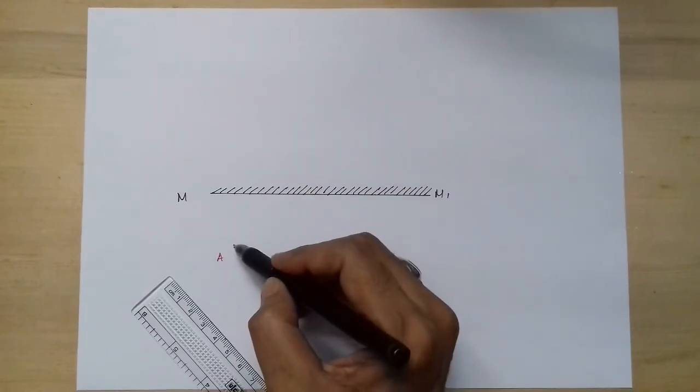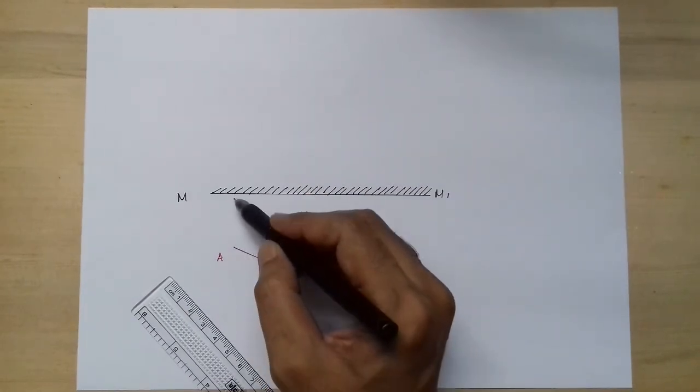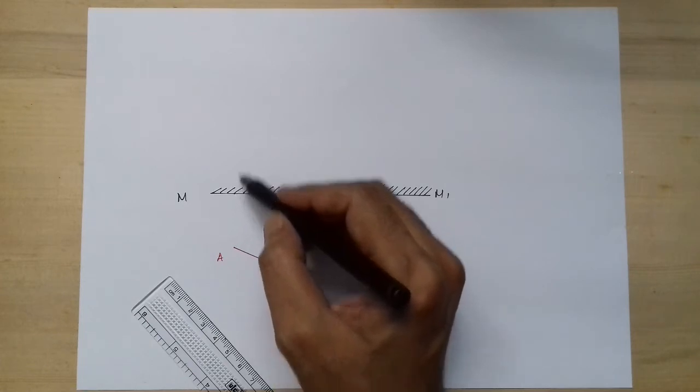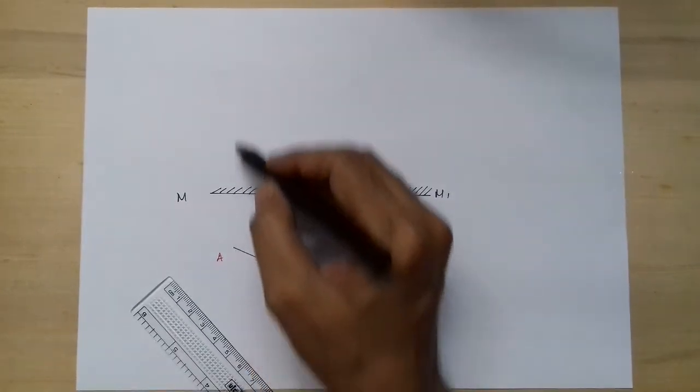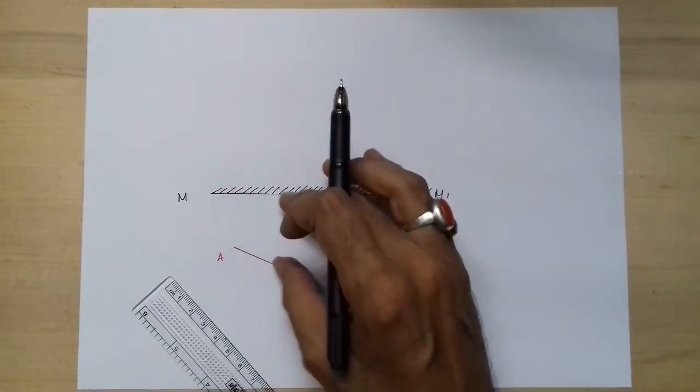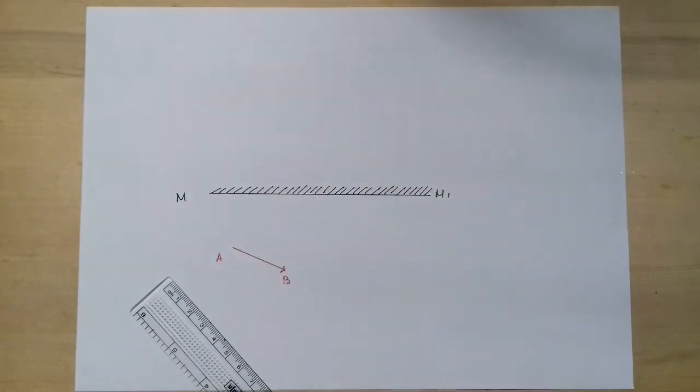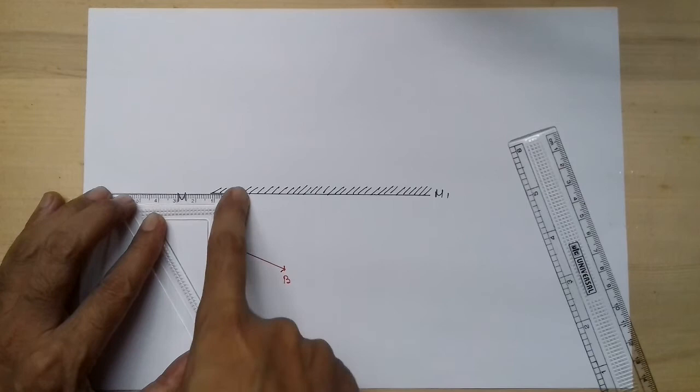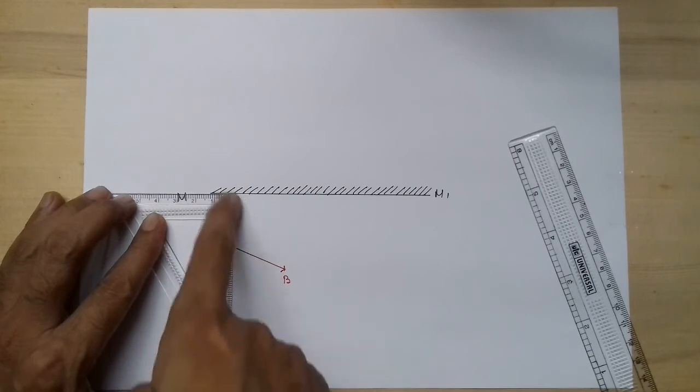So we will draw a perpendicular and measure these two distances. We have learned how to draw a perpendicular from a point outside the line. This is the point outside the line.